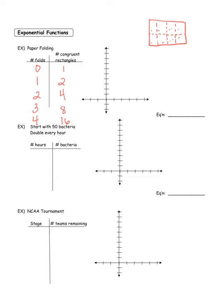Thinking about what this graph looks like: at zero folds, one rectangle; at one fold, two; at two folds, four; at three folds, eight; at four folds, 16 — way up high. The graph has a bend in it. You might say it looks like a parabola, but it's not. The other half of the graph — which doesn't make sense in the context of this problem — would look like the reflection, giving that classic exponential curve shape.